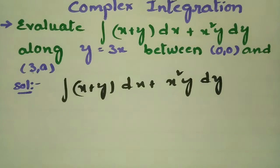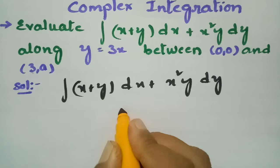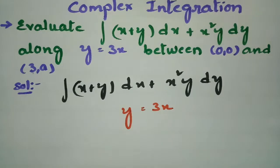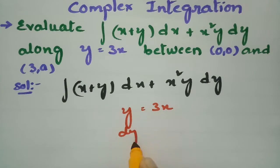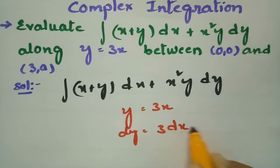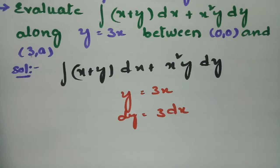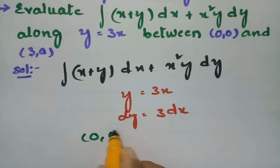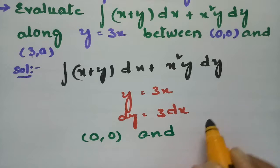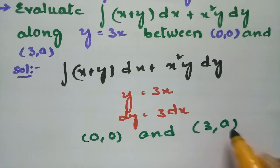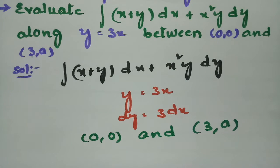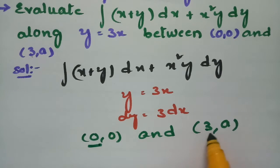Given y = 3x, therefore dy = 3dx. The given points are (0, 0) and (3, 9). Since I am choosing a line integral, I will transform each and every variable in terms of x. The x limits are from 0 to 3.